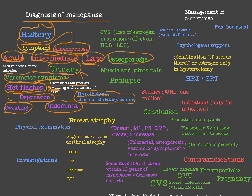Late complications include osteoporosis. The cause of osteoporosis after menopause is that estrogen regulates osteoclast activity. When we lose estrogen after menopause, women are at increasing risk of osteoporosis. About 15 percent of postmenopausal patients will have osteoporosis within five to seven years, and 50 percent will have osteopenia.